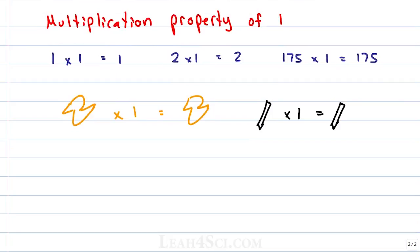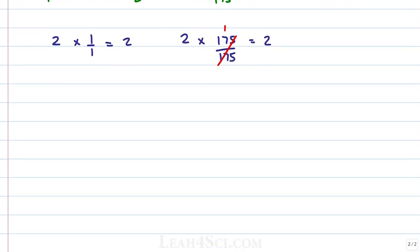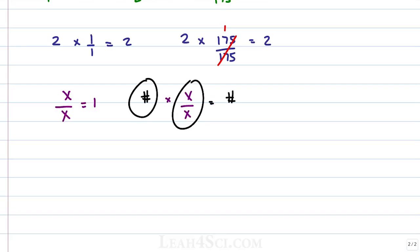What if I introduce fractions? A number divided by itself is equal to 1. So 1 over 1 equals 1, 2 over 2 equals 1, 175 over 175 equals 1. If I change the number: 2 times 1 over 1 is just 2 times 1 equals 2. And 2 times 175 over 175 is just 2 times 1, which still equals 2. Any number divided by itself equals 1, so if you take a number and multiply it by a fraction consisting of a number divided by itself, it simply equals that number.